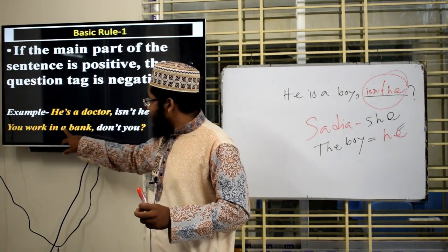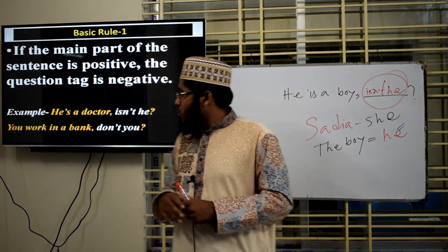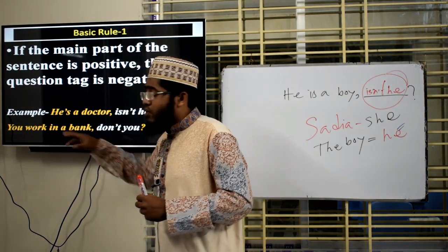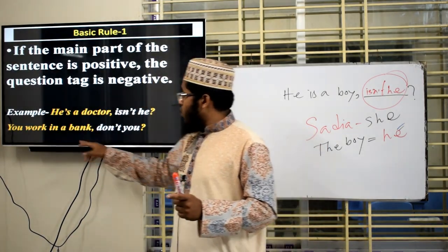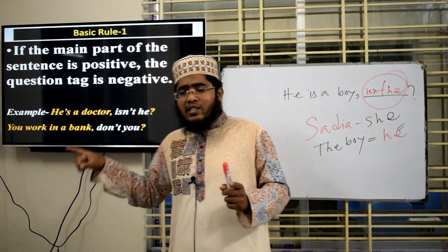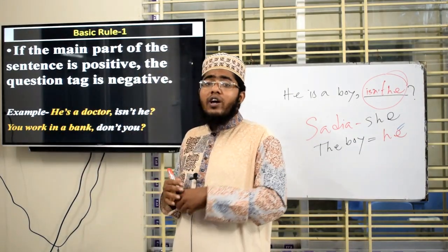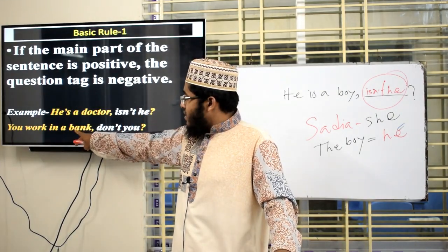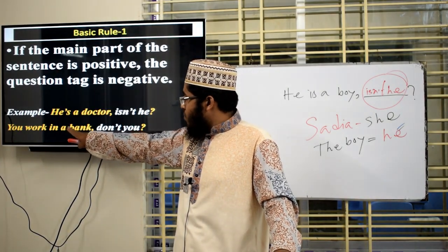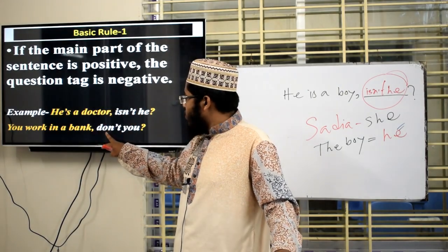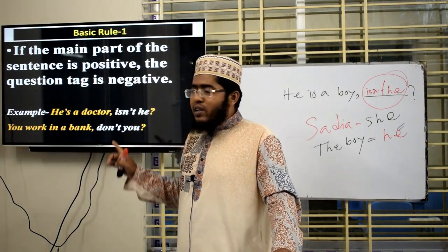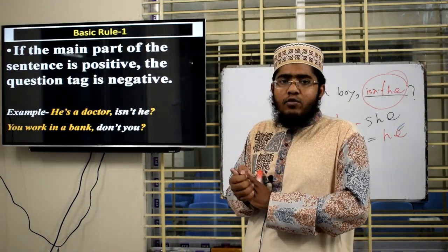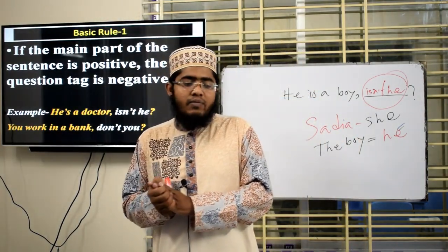Next sentence: 'You work in a bank.' This is a positive sentence with no auxiliary verb, so we know it is present indefinite tense. That's why we take 'do' or 'does'. The subject is 'you', so we use 'don't you'. This is the first rule: if the sentence is positive, we make a negative interrogative tag question.